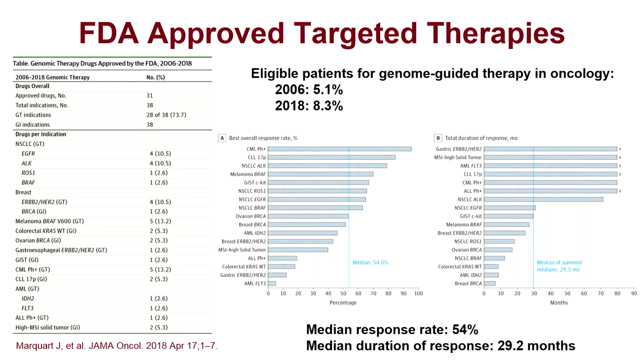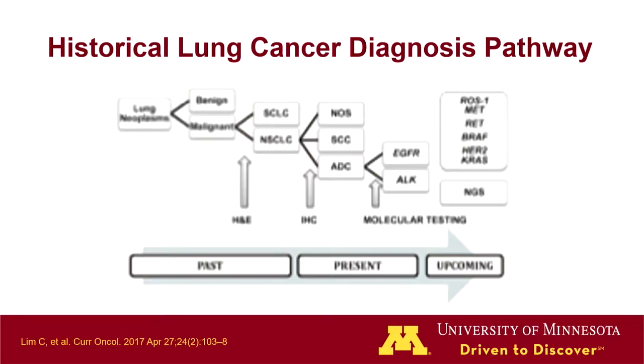I'll walk through one of the poster children for precision oncology: lung cancer. Historically, we've broken down lung cancers based on how they look under the microscope — the morphology of cells: is it a small cell or non-small cell lung cancer, and further categorized by histology, whether it's squamous cell or adenocarcinoma? In the last 15 years, we've been able to do sequential testing for EGFR and ALK alterations. These were typically done through sequential tests — looking first at EGFR, which is more common, and if absent, then ALK, which is more rare — these alterations tend not to co-occur.